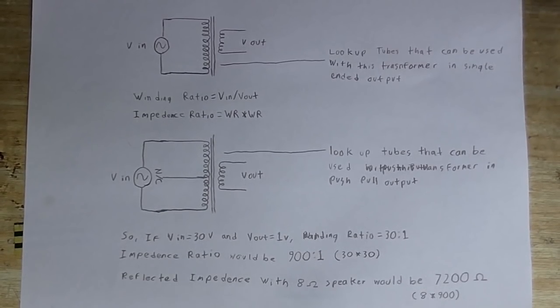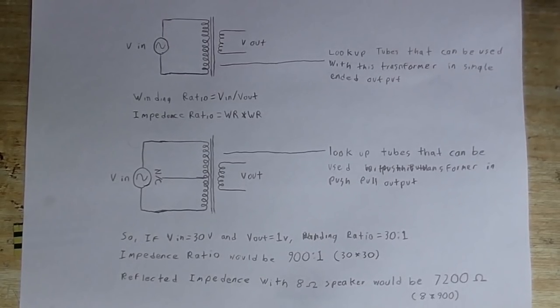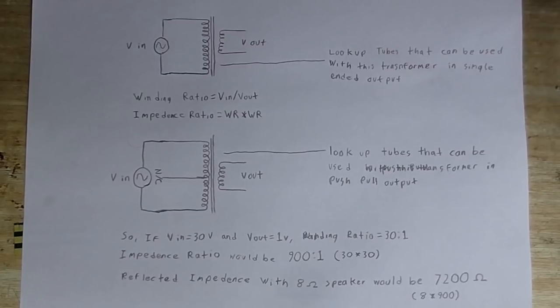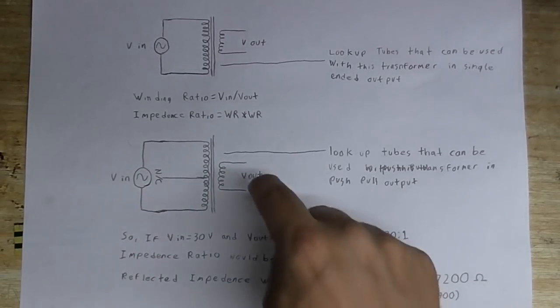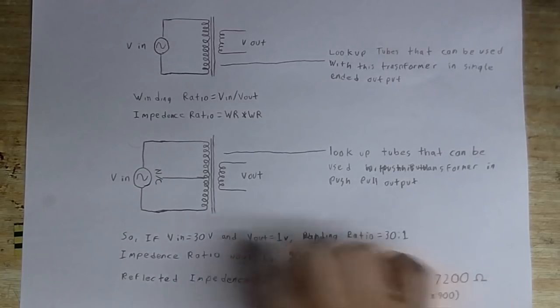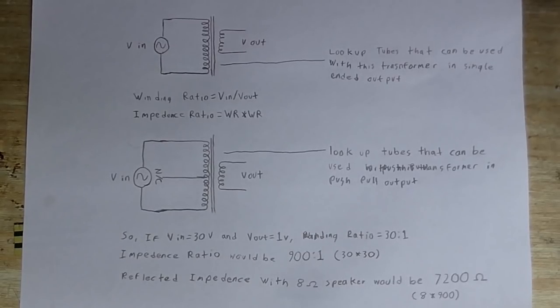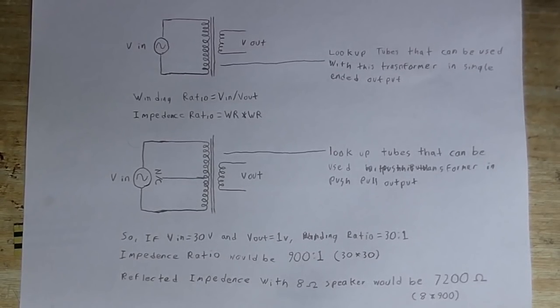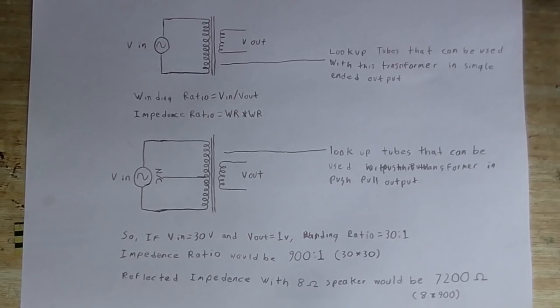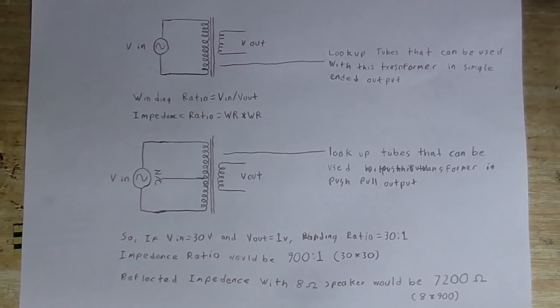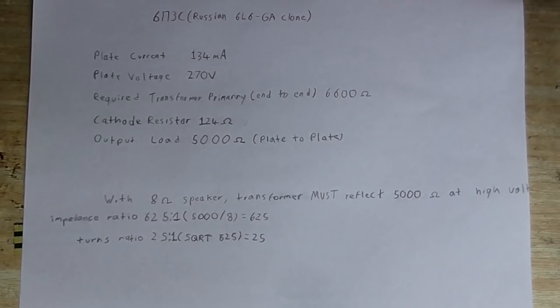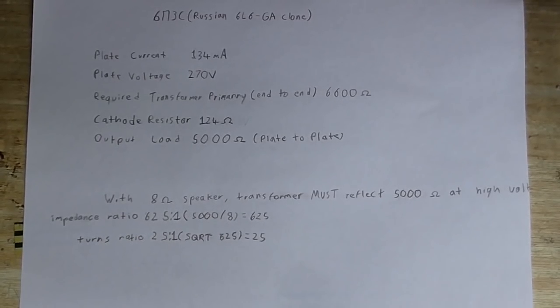And we want to find out what load an 8 ohm speaker is going to put on the tubes output when it's connected to the transformer. So this is where the valves would connect. That's where the speaker would connect. So whatever we connect here is going to be reflected here only the impedance is going to be a lot higher. So we're going to connect our AC here and see what comes out there. And I've worked it out that the ideal transformer we need will have an impedance ratio of 625 to 1, which is about a 25 to 1 turns ratio.